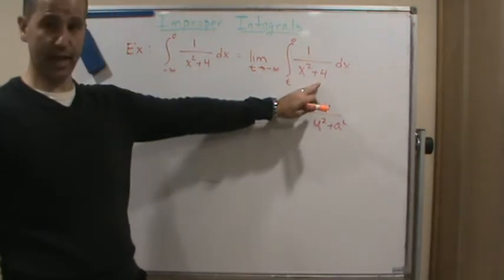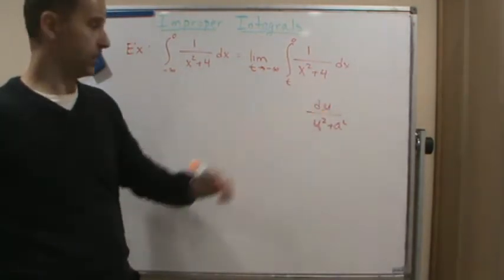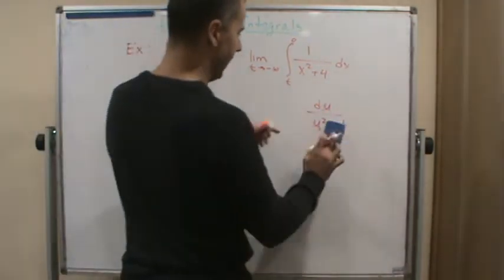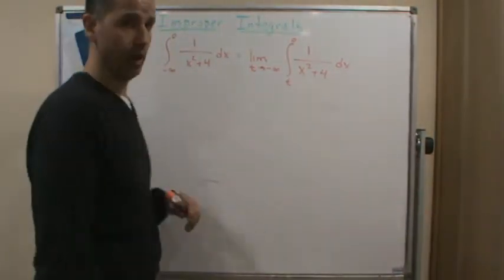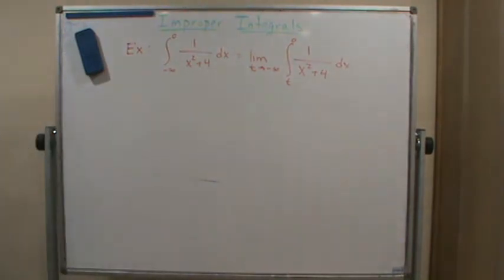So this is going to have an inverse tangent as an antiderivative. Since a in this case is 2, it's going to be the inverse of 1 over 2, or 2 times over 2. That's what we want to make sure we put in there.